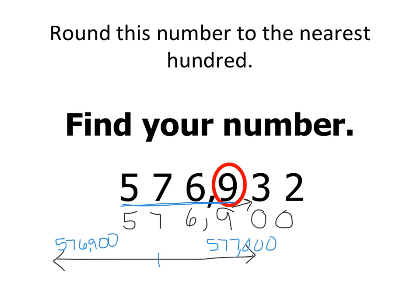Splitting 100 in half, my midway point would be at the 50 mark. 576,932 is less than 576,950. Because it's less, it rounds to the lower spot on my number line, which is why my answer is 576,900.